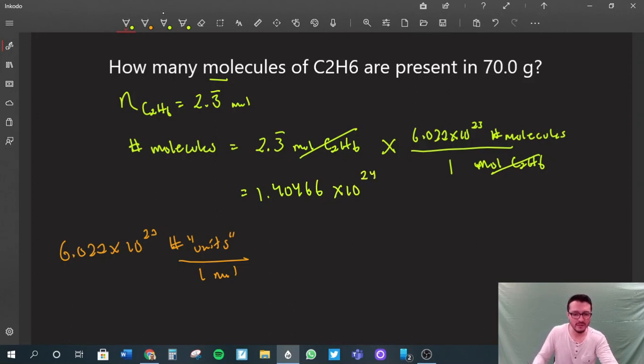If we round this to the nearest sig fig, we have three digits given to us previously, so it'll be rounded to this digit here. So it would be 1.40 times 10 to the 24 molecules of C2H6, and we're done.